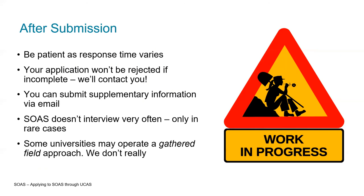After submission, you should be patient as response times will vary depending on the university and the course you're applying to. Your application won't be rejected if it's incomplete — each university will normally contact you if there's anything else they require. You can also submit supplementary information by email after applying through UCAS. For example, if you're an international student taking a range of different qualifications, you might want to send a more detailed transcript to the university afterwards.